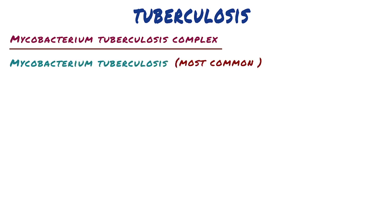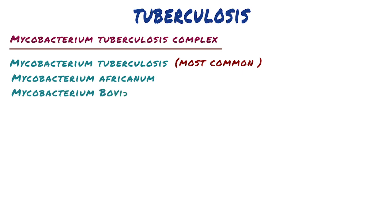A closely related organism, isolated from cases in West, Central, and East Africa, is Mycobacterium africanum. The complex includes some zoonotic members, such as Mycobacterium bovis, once an important cause of tuberculosis transmitted by unpasteurized milk, and currently responsible for 150,000 human cases worldwide.